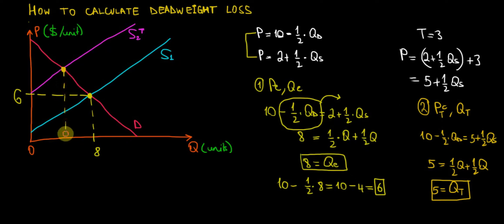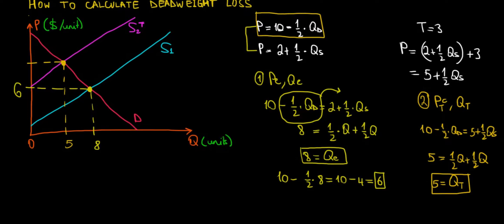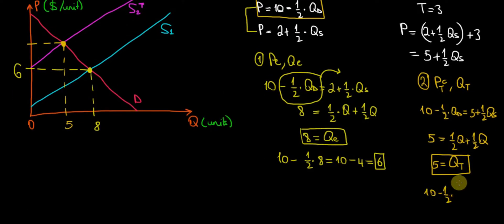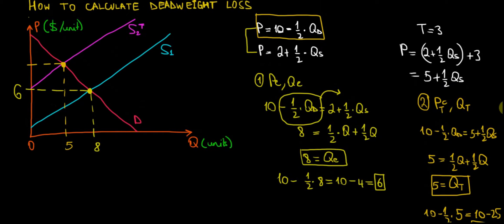Now, what is the price that consumers actually pay? I substitute the post-tax quantity into the demand price function: 10 minus 1/2 times 5 equals 10 minus 2.5 equals $7.50 per unit — the price consumers pay after the tax. At the same time, from that $7.50, $3 goes to tax, so we subtract $3 and get $4.50 per unit — that's the price the firm gets to keep after the tax.